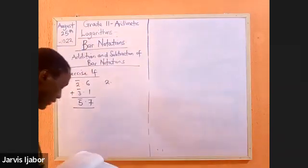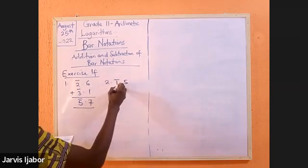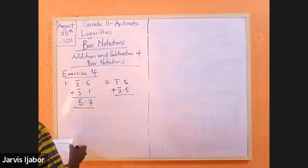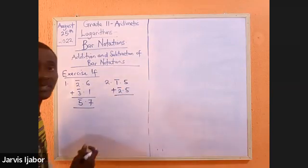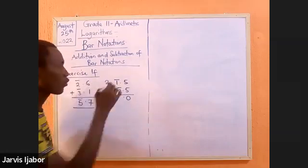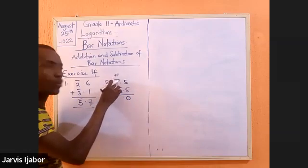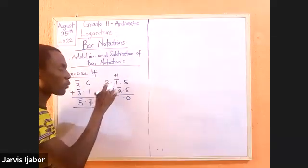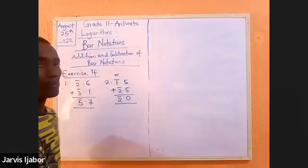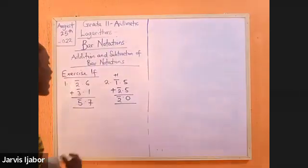Let's go to question 2. We have bar 1.5 plus bar 2.5. In this setup, 5 plus 5 will give me 10. So, I put down 0 and I have a carry of positive 1. Positive 1 plus negative 1 give me 0. 0 plus negative 2 give me bar 2. So this answer becomes bar 2.